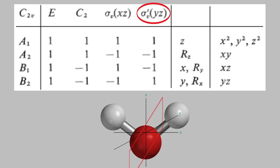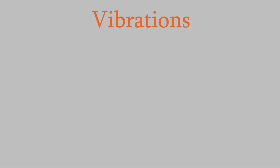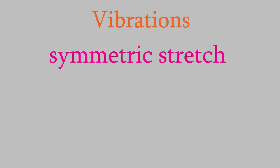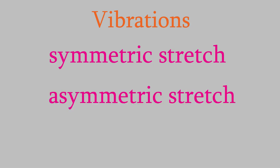The rest of the character table contains information that will help us interpret vibrational spectra. Let's do that next. First, let's remind ourselves of the kinds of vibration that a molecule can have. As we saw in video 13, it turns out that there are only three basic types of vibration that a molecule can have. These are the symmetric stretch, the asymmetric stretch, and the bending vibration. Let's think about what each of these vibrations looks like for water.